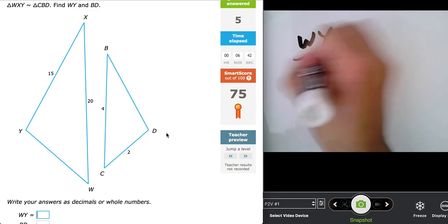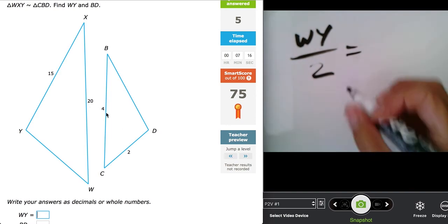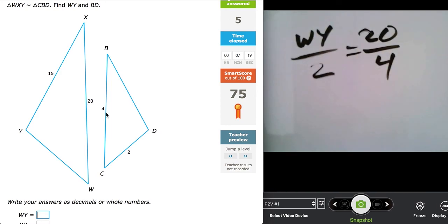So WY, which is right down here. So this side corresponds with this one. So WY, which is WY relates to two as, and let's take two sides we already know. If we tried using the 15, we would have to know what BD is, but we don't. So now we're going to use these other two measurements because XW relates to BC. So 20 to four. And I'm going from left to right. So because I went from left to right with this one, I must go from left to right with this one. So that is 20 over four.